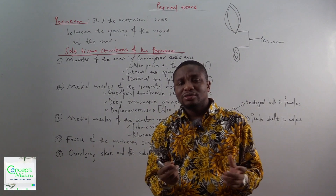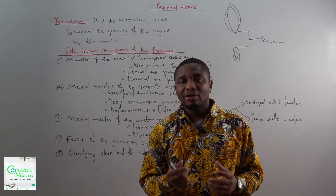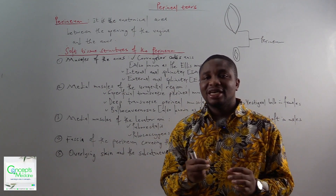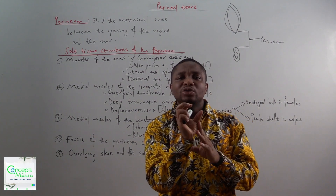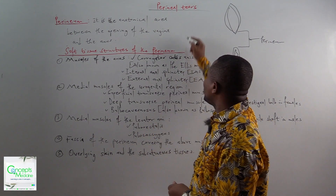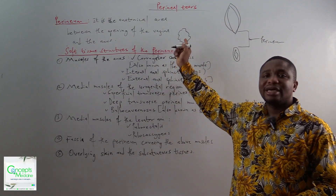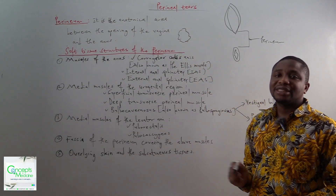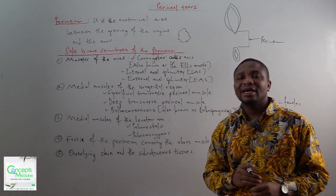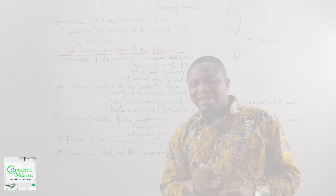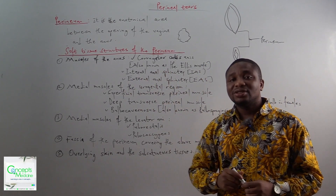What does this muscle do? When the corrugator cutis ani, or the Ellis muscle, contracts, it forms ridges within the anus. When we look at the anus, it has this kind of ridge structure, and this is formed as a result of the contraction of the Ellis muscle, or what we call the corrugator cutis ani.